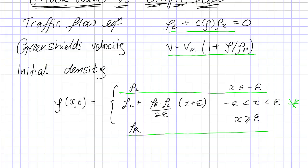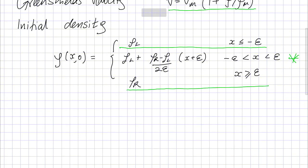So the initial density is described by these two values, rho left and rho right. And I want to consider the case where rho left, the density on the left, is less than the density on the right. And this will then mean that the traffic on the left is faster than the traffic on the right.